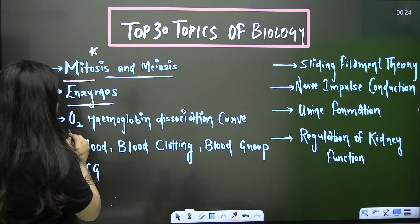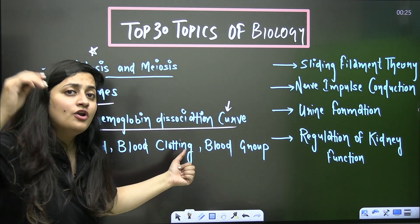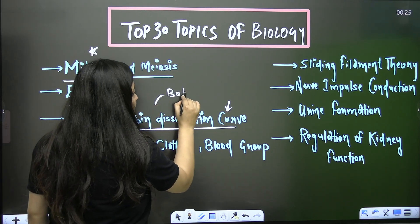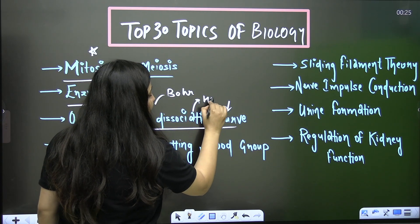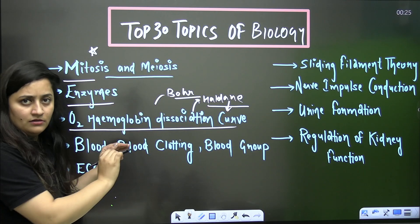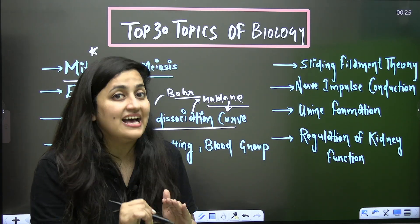Then oxygen-hemoglobin dissociation curve. This is directly from your breathing and exchange of gases. When you study this topic, along with that even the Bohr effect you discuss, even the Haldane effect you discuss. So you just don't cover the one topic but along with that you can also answer some other questions as well. So kindly do not miss this topic as well.